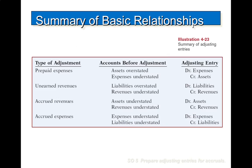Here is a summary of the basic relationships for all adjusting entries — a good study point for preparing for the test. For prepaid expenses: assets are overstated and expenses are understated, so you debit expenses and credit assets. For unearned revenues: liabilities are overstated and revenues are understated, so you debit liabilities and credit revenues. For accrued revenues: assets are understated and revenues are understated, so you debit assets and credit revenues. For accrued expenses: expenses are understated and liabilities are understated, so you debit expenses and credit liabilities.